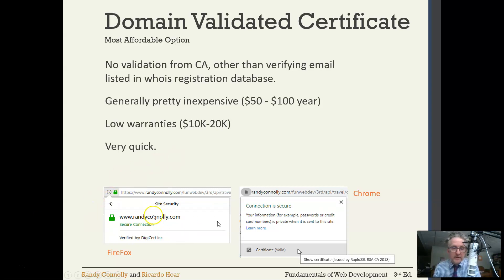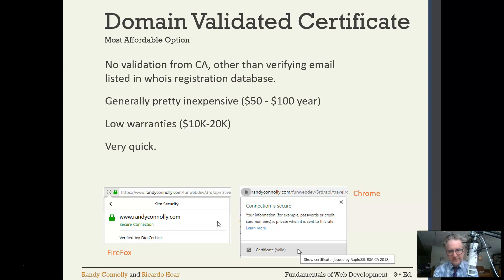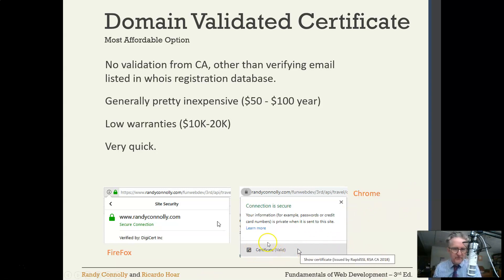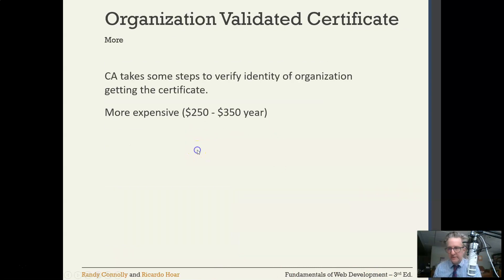In browsers, in Firefox you get a little icon that you can click on and it'll tell you who the certificate is from. Chrome has decided to display less information — their explanation is that HTTPS should be the default, so no extra information is needed. You can, however, see more information about the certificate if you need to.